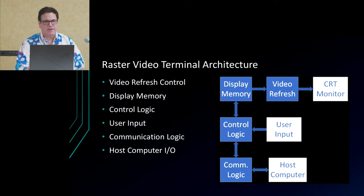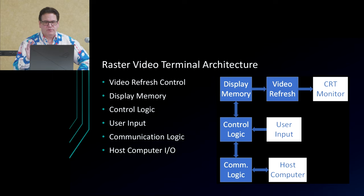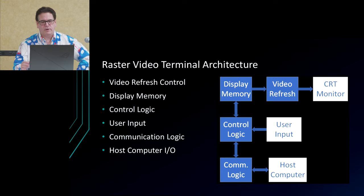Let's refresh ourselves on how a raster video terminal works. You have display memory — chips or whatever mechanism is used for storage (could be core memory, a delay wire, or a big shift register depending on the age). That is read by a video refresh circuit driving the CRT. User input goes into control logic that decides which information to write into display memory. Command characters consumed by the control logic don't go directly into display memory, and there's communication logic interacting with the remote host computer.